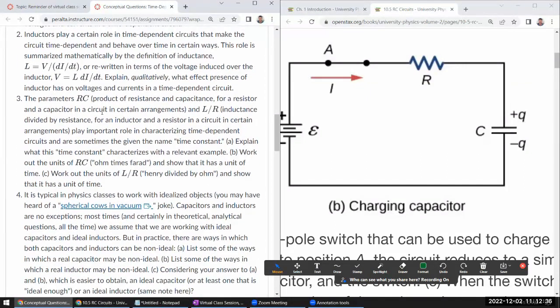Okay, next question. Inductors play a certain role in time-dependent circuits that make the circuit time-dependent over time in certain ways. This role is summarized mathematically by the definition of inductors. Or rewritten in terms of the voltage induced over the inductor. By the way, in this expression, I think I'm basically imagining an absolute value. I'm not dealing with the signs here because they get complicated.